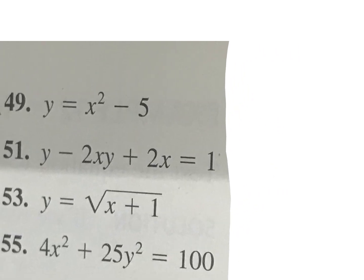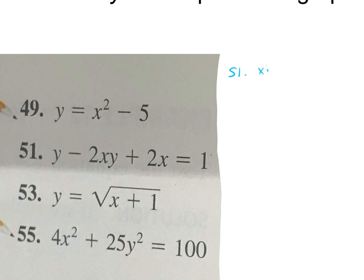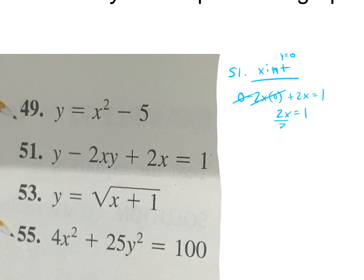Let's look at problem 51. Find the x-intercept first — plug in 0 for y. So we have (0 minus 2x)(0 plus 2x) equals 1. The zeros go away, leaving 2x equals 1. Divide by 2, so x equals one half. The x-intercept is written as (1/2, 0) — the one half goes in the x spot since it's the x-intercept.